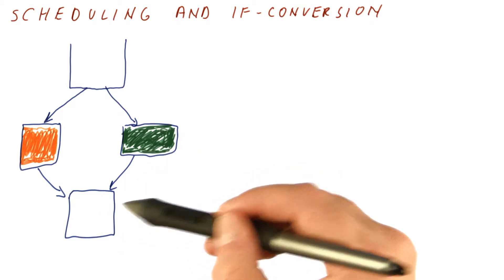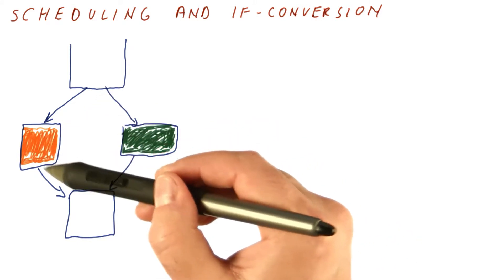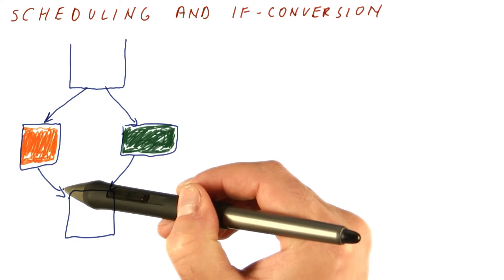For example, take an instruction from here to fill a stall here. Because if we end up going this way, that instruction doesn't get done. So it gets a lot more complicated.